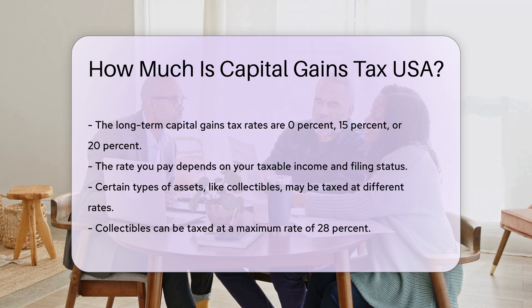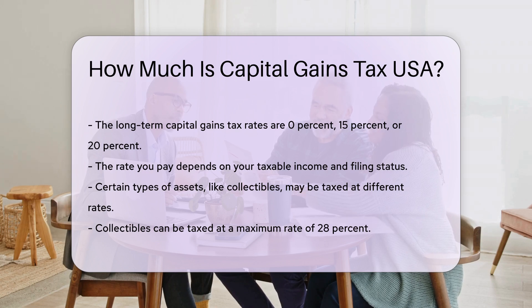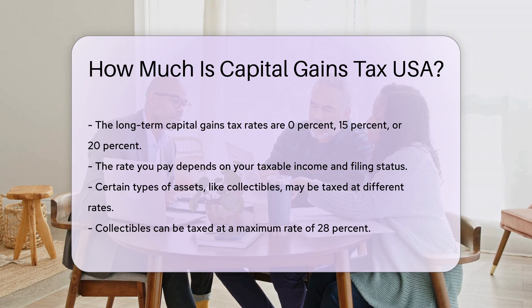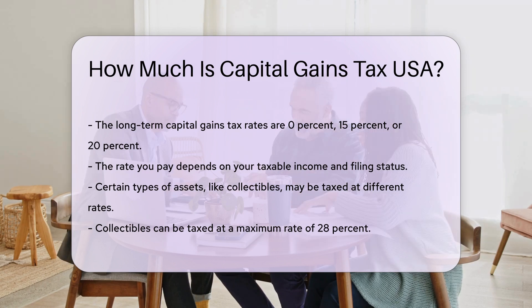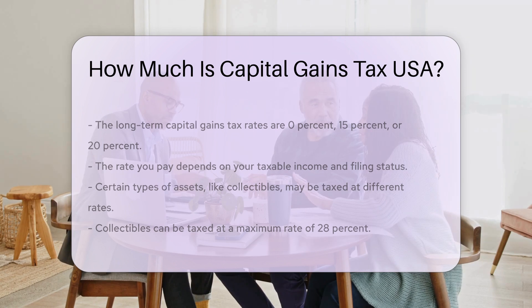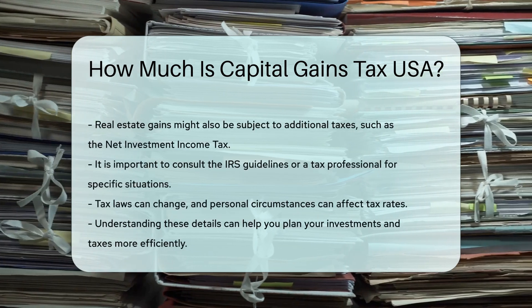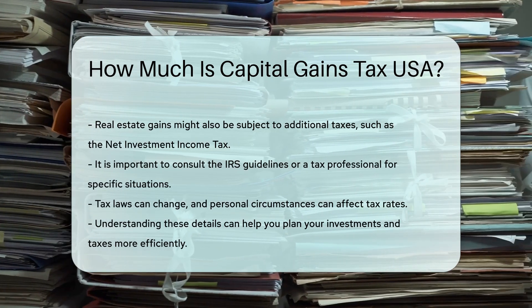Certain types of assets, like collectibles, may be taxed at different rates. Collectibles can be taxed at a maximum rate of 28%. Real estate gains might also be subject to additional taxes, such as the net investment income tax.